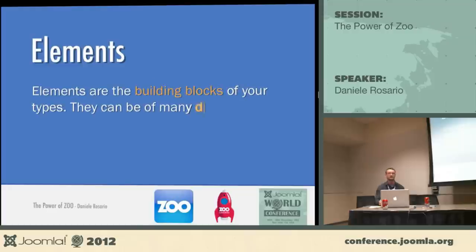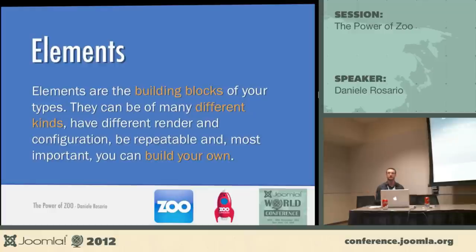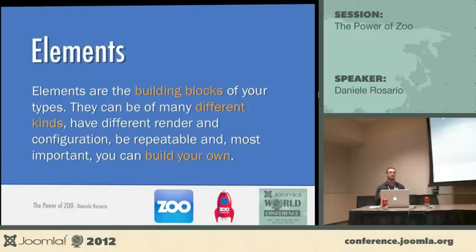Elements are, in my opinion, the greatest Zoo feature ever. These are the building blocks of the types — each field you insert into a type is an element. You can have a text field, text area, select field, image field, video field, and many more. I think there are around 20 basic elements. If you need something more, you can create it — both as an integrator or as a developer, you can do very advanced things with this feature.